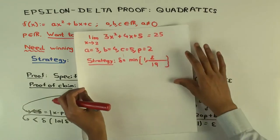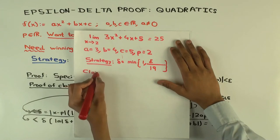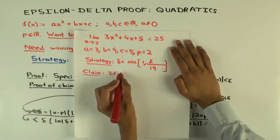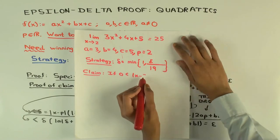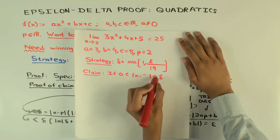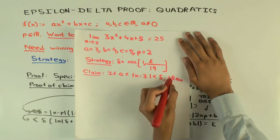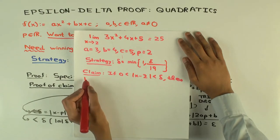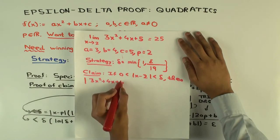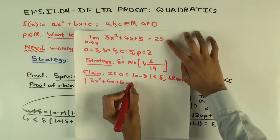Okay good, so now what's our specific claim? If zero is less than absolute value of x minus 2, less than delta, then the distance between f(x), which is 3x squared plus 4x plus 5, minus 25 is less than epsilon.